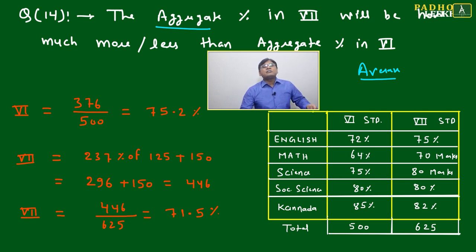We'll convert individual marks - 72 percent out of 100, 64 percent out of 100 - into absolute numbers, absolute marks. Then we'll take the total out of total marks, which will be 500 in sixth standard.